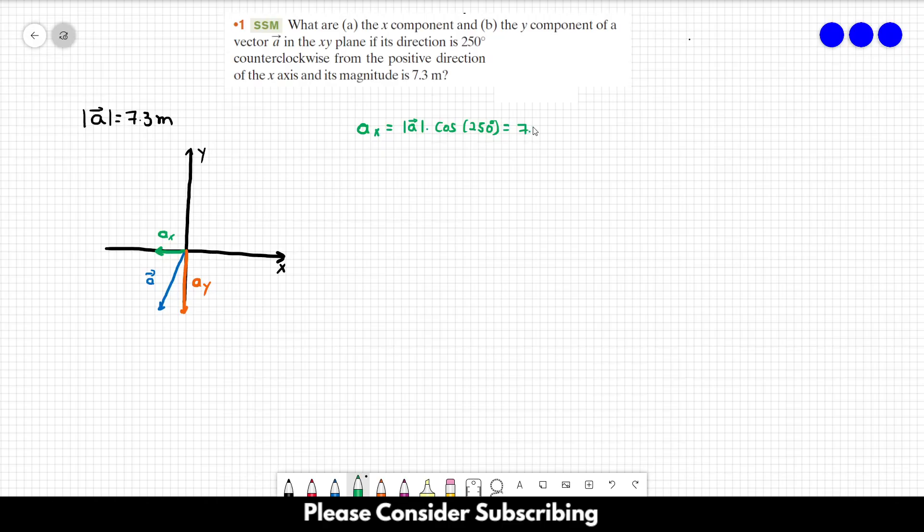So the magnitude of the vector is 7.3 times the cosine of 250 degrees, which gives us minus 2.5 meters. So this is the answer of letter A.